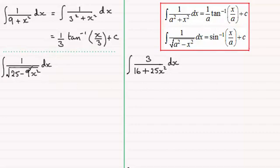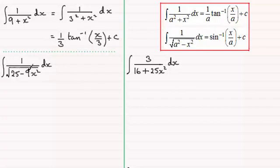For the next example we have the integral of one divided by the square root of 25 minus nine x squared with respect to x. With the two standard integrals we have just one x squared — nothing in front of the x squared term other than a one or minus one. But here we've got minus nine in front, so we need to handle it differently. What we do is take that nine and pull it out the front of a bracket.